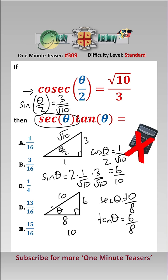Therefore sec times tan is 10 over 8 times 6 over 8, which is 60 over 64, which is 15 over 16, which is answer E.